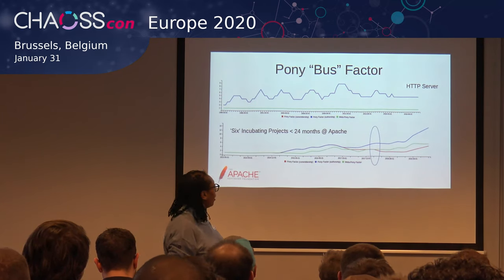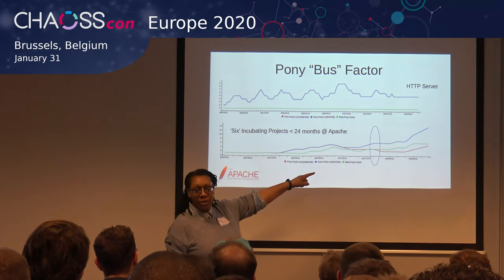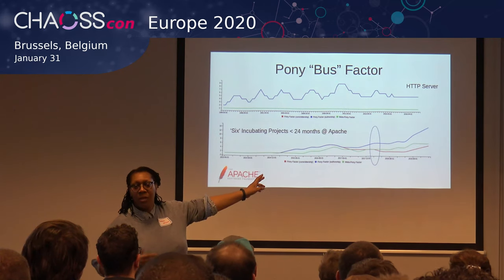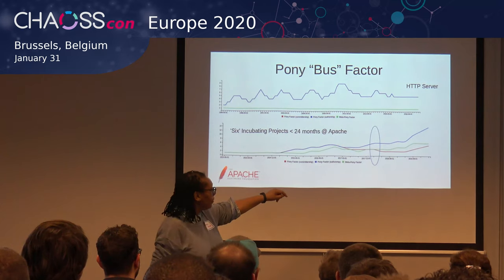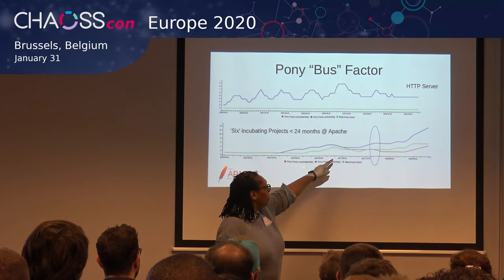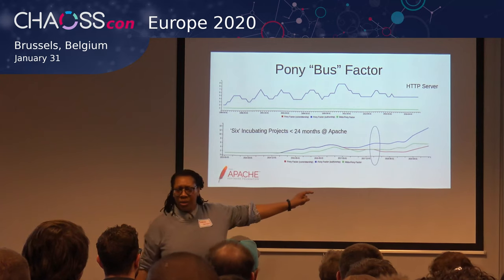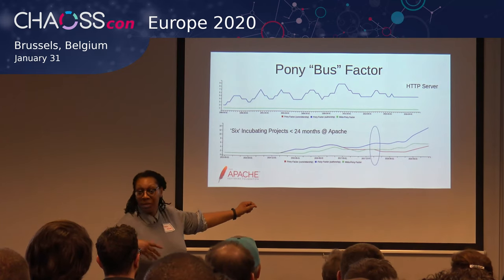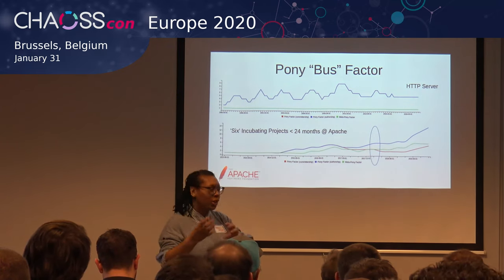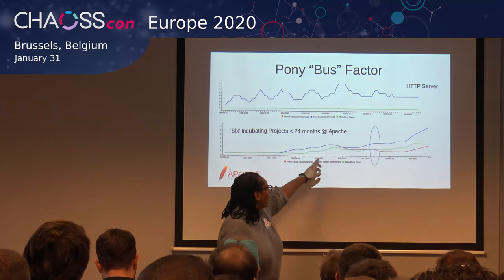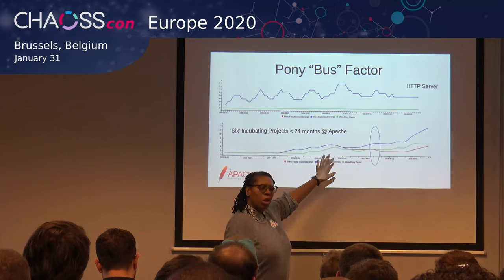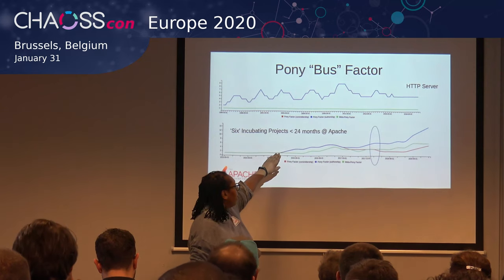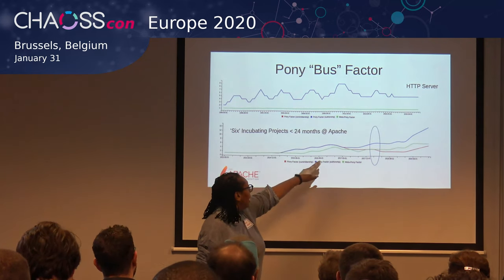Looking at the blue line — the pony factor of the contributors — you can see there's a bit of a stall. Maybe this is one reason why they decided to come to Apache, because sometimes projects come to Apache to build their communities. You can also see the pony factor of the committers — the red line — is actually going down, meaning committers were becoming less and less active. Maybe that's another reason they came to Apache to build a community.